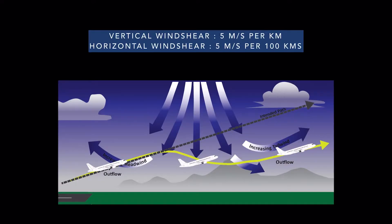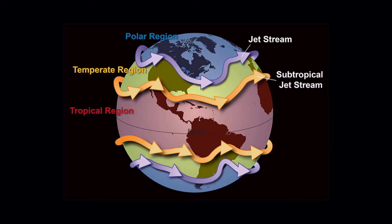The vertical wind shear is about 5 meters per second per kilometer and the horizontal wind shear can be around 5 meters per second per 100 kilometers, meaning that the vertical wind shear is stronger as compared to the horizontal wind shear. There are four main jet streams observed on our planet.